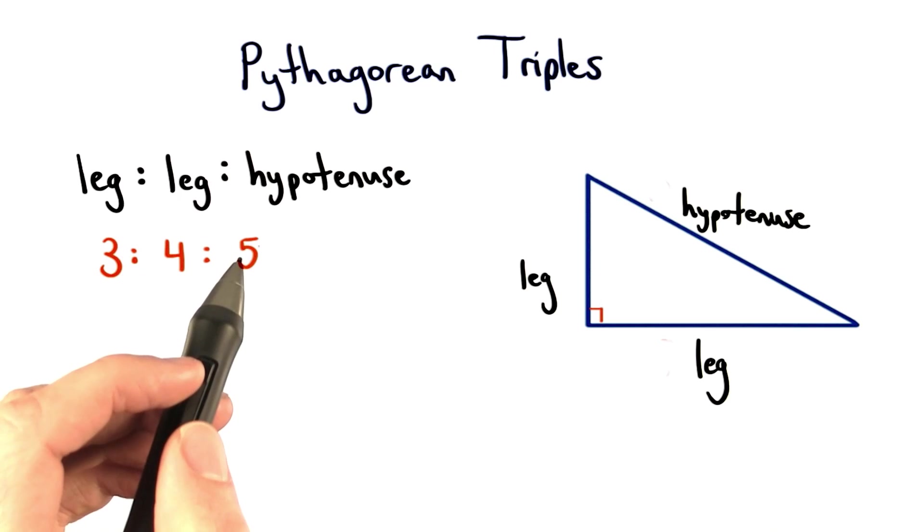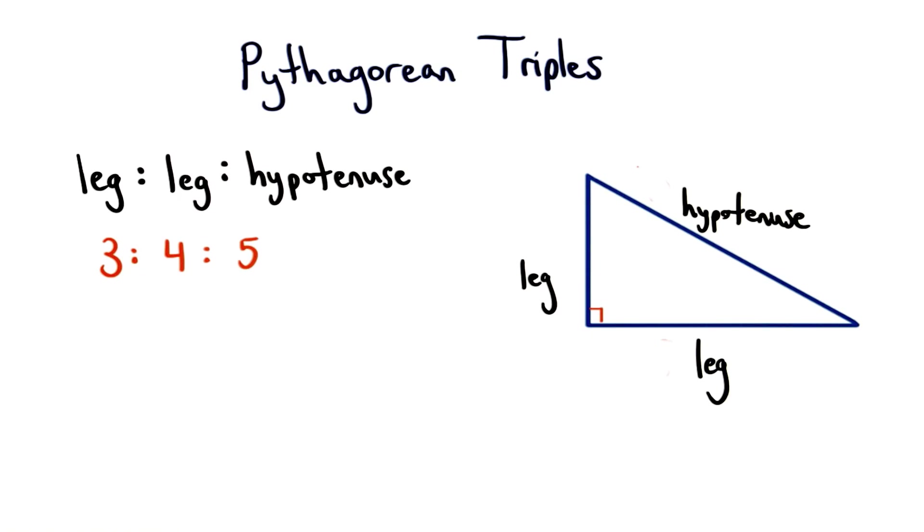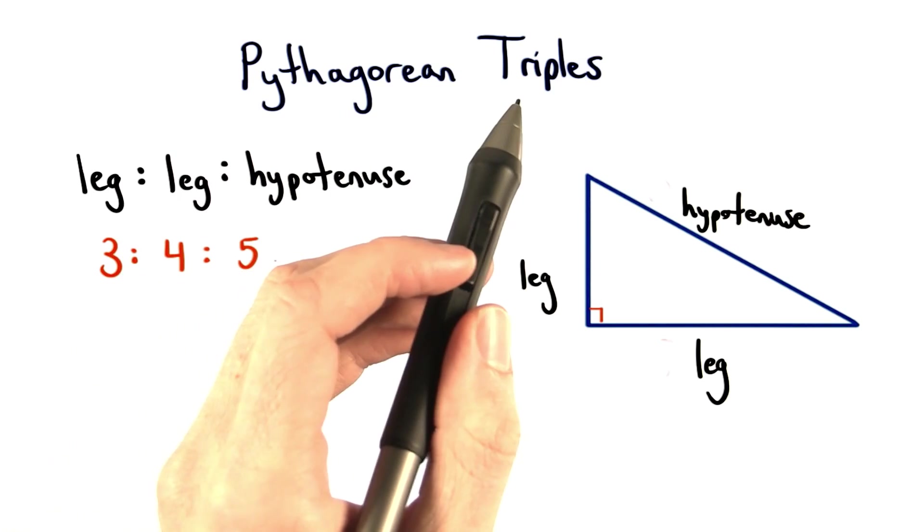So by knowing a special right triangle, we can generate an infinite amount of larger right triangles. That's why this ratio is so important. In fact, it's called a Pythagorean triple.